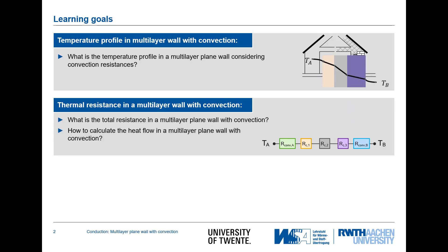What are the learning goals in this video? First of all we will look at a house wall where we add additional thermal resistances due to the convection taking place from the inside to the wall and from the wall to the outside. Then in the next step we will see how to calculate values for the heat transfer rate by accounting for the thermal resistances due to convection.